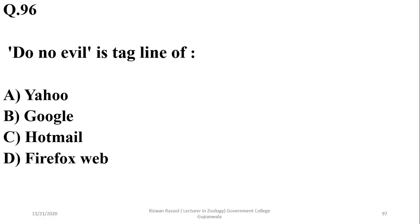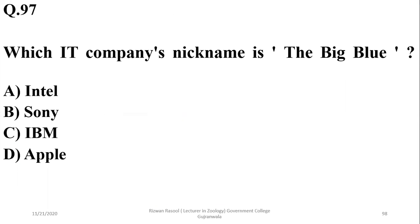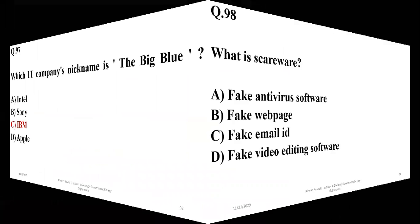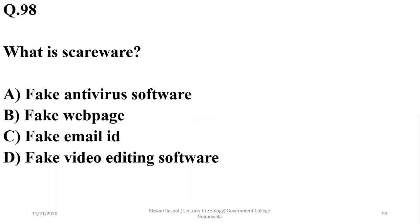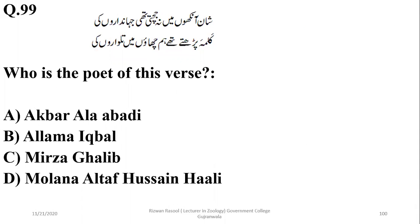'Do no evil' or 'Do the right things' is a tagline of Google. So the right option is B. Which IT company's nickname is 'The Big Blue'? It's IBM. What is scareware? Scareware refers to fake antivirus programs or software. So the right option is A.